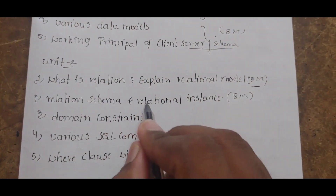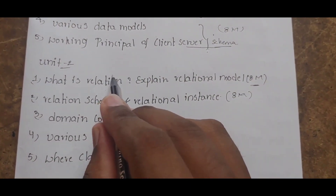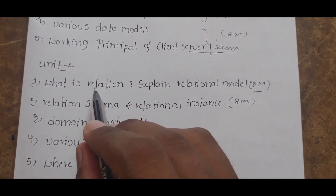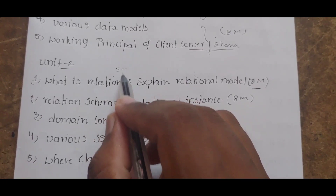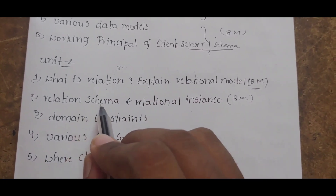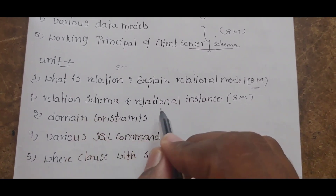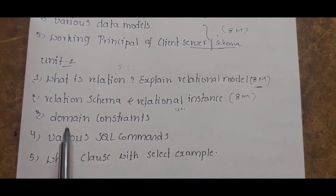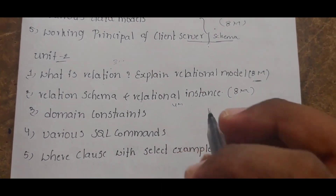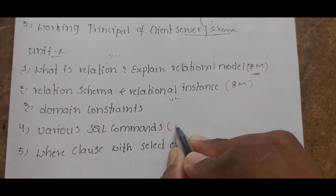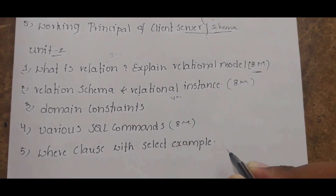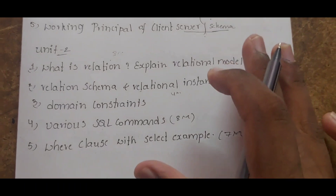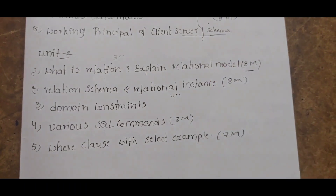Relational schema and relational instance are important. Focus on domain — concentrate on the latest marks. The question 'explain relational schema and instance' is a 4-mark question, and the rest is a 3-mark definition-type question. These are the most important questions for this section.